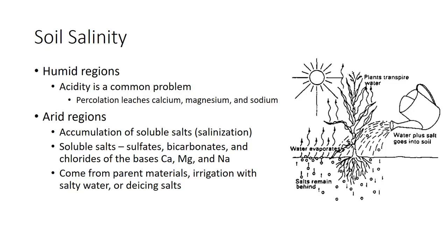In humid regions of the United States, acidity is a common problem for growers because percolation leaches calcium, magnesium, and sodium from the soil. Growers in more arid parts of the nation often have a different but related problem: an accumulation of soluble salts of these same bases. This accumulation tends to be a problem in dry climates where natural levels of rainfall cannot flush salts out of the soil. We also associate this salinization with poor drainage in irrigated fields. Irrigation imports salts into fields, and when drainage is poor, irrigation raises the water table, bringing salt-laden water into the root zone of crops.